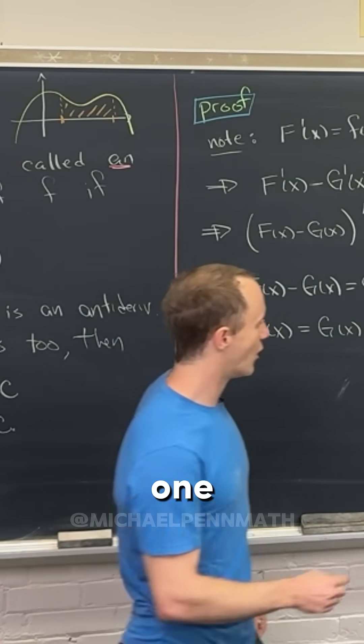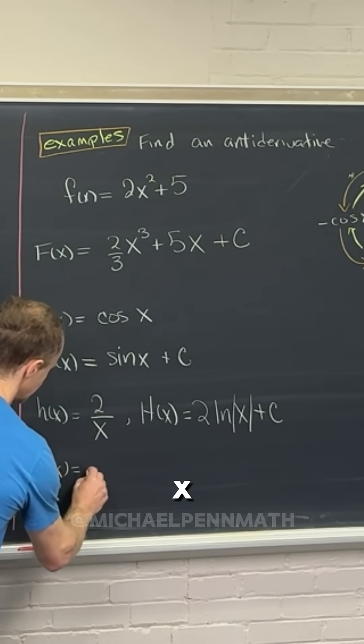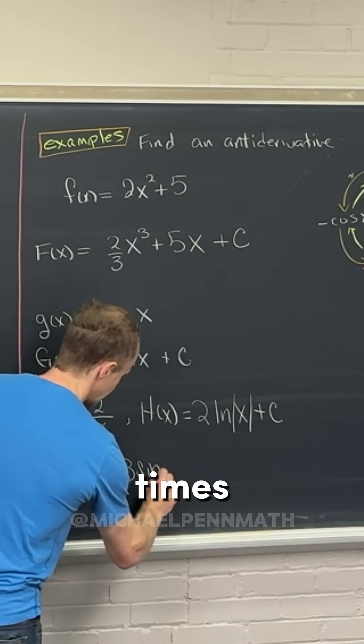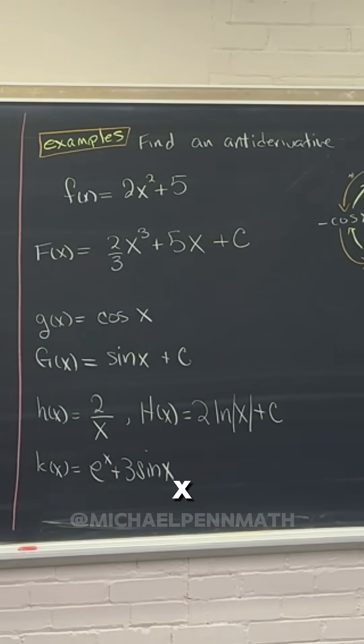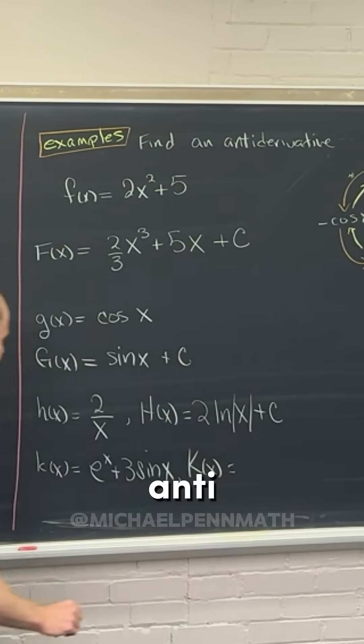Then maybe we could do one more. Let's see. Let's say lowercase k of x is equal to e to the x plus 3 times sine x. So what should that be? So the antiderivative.